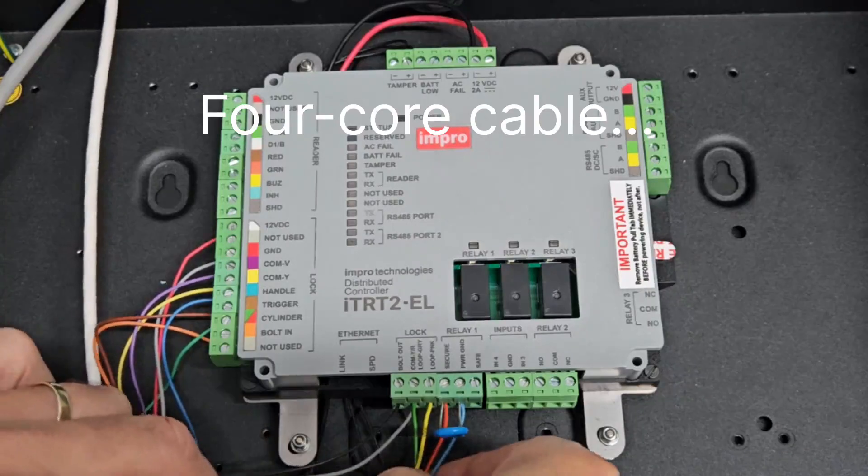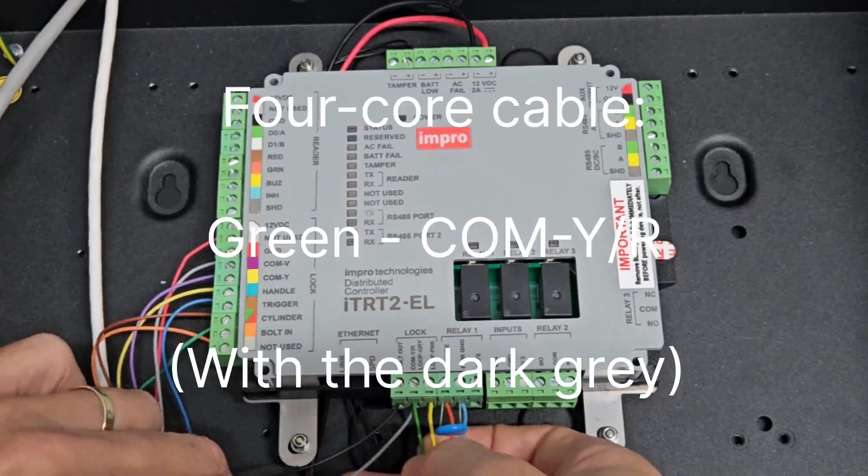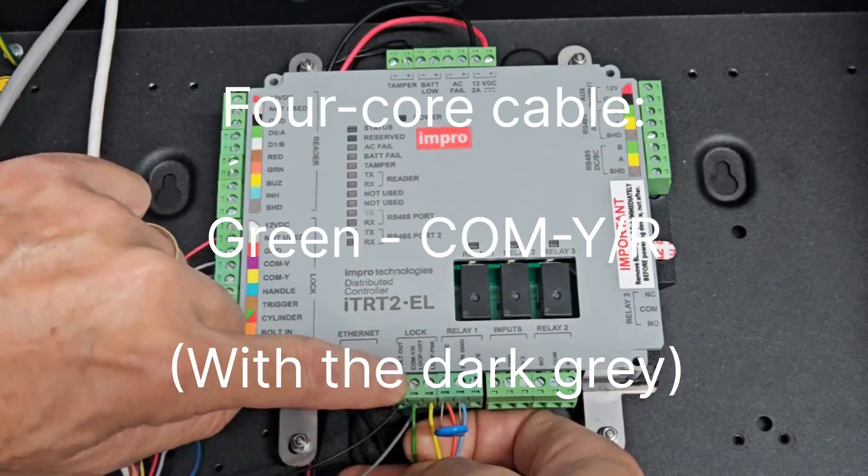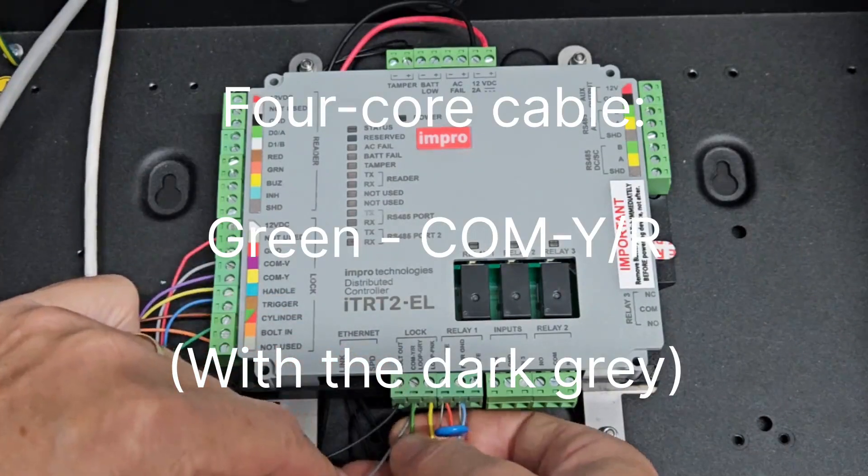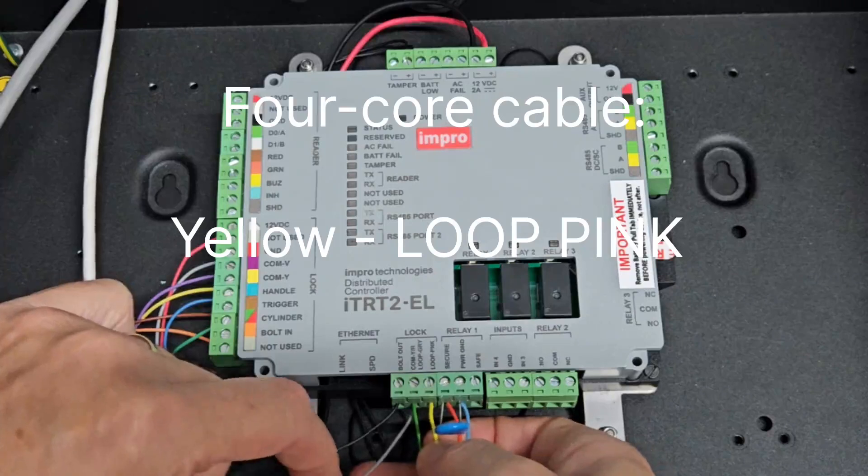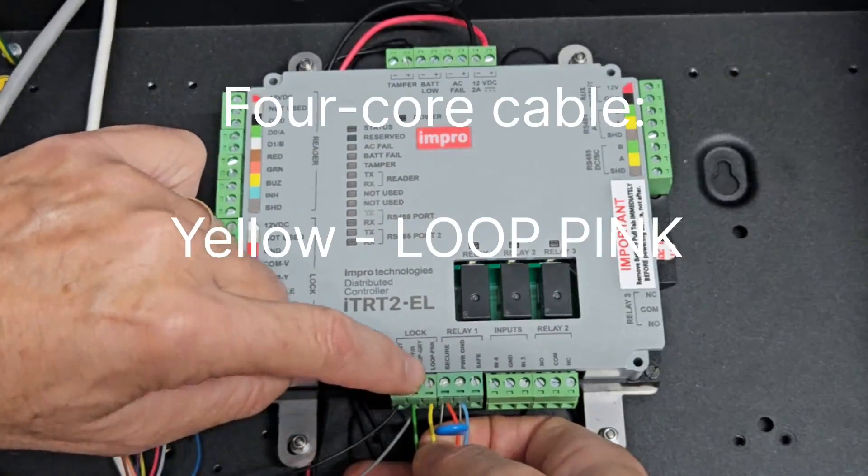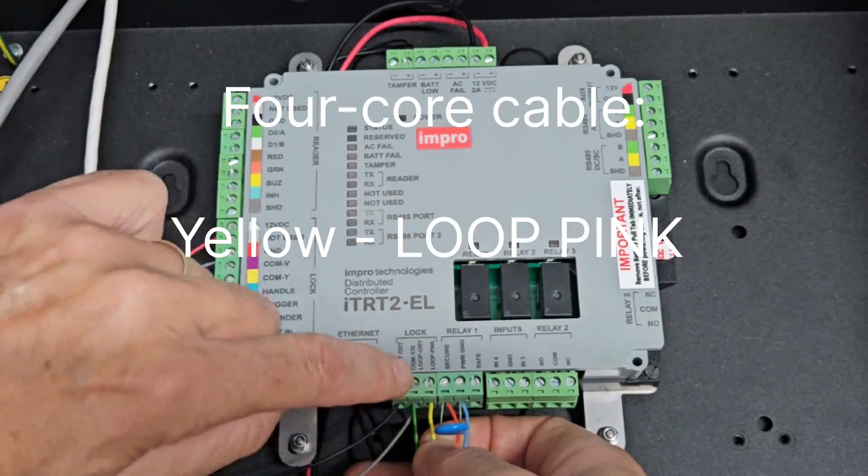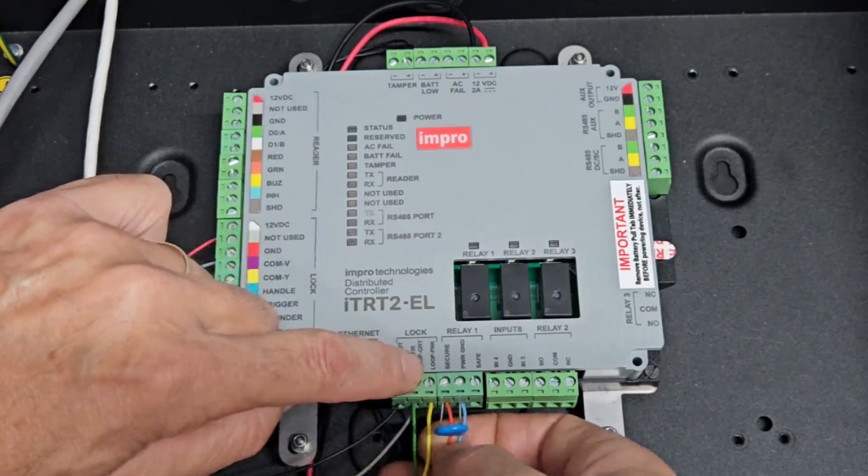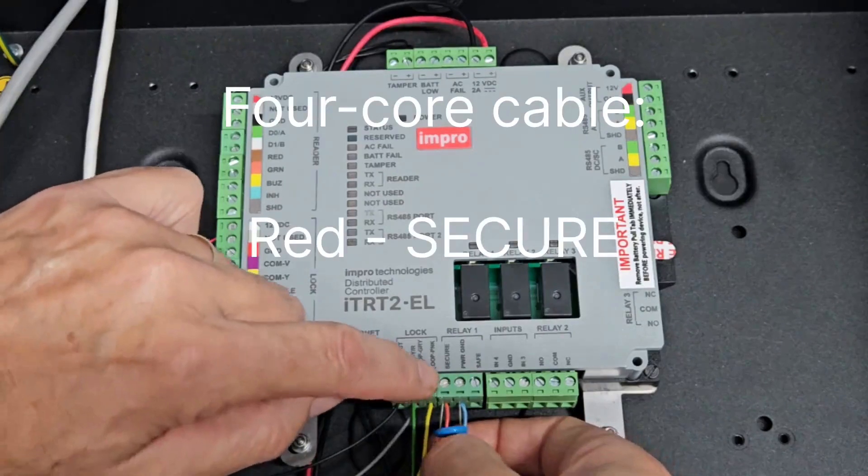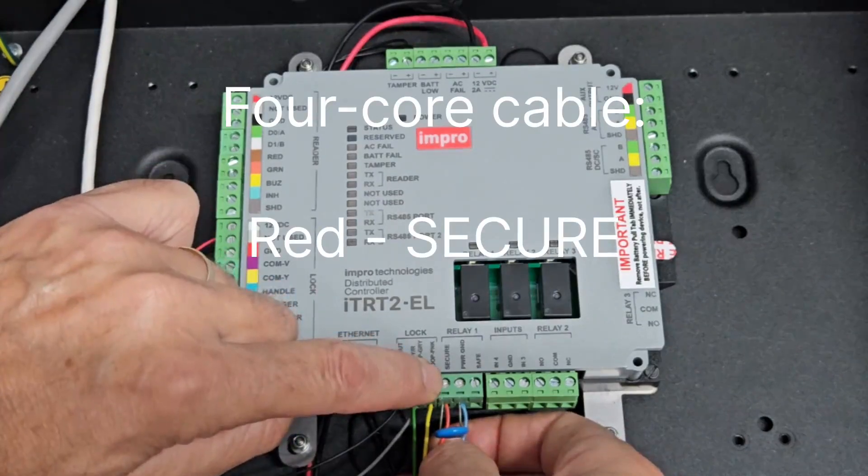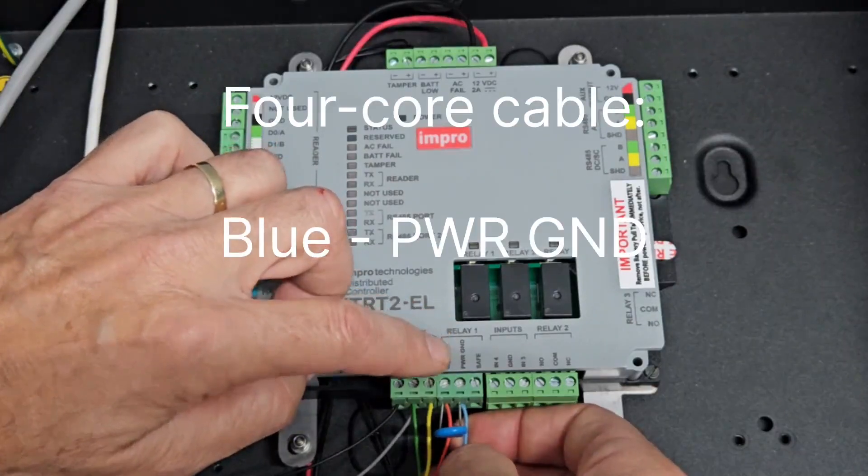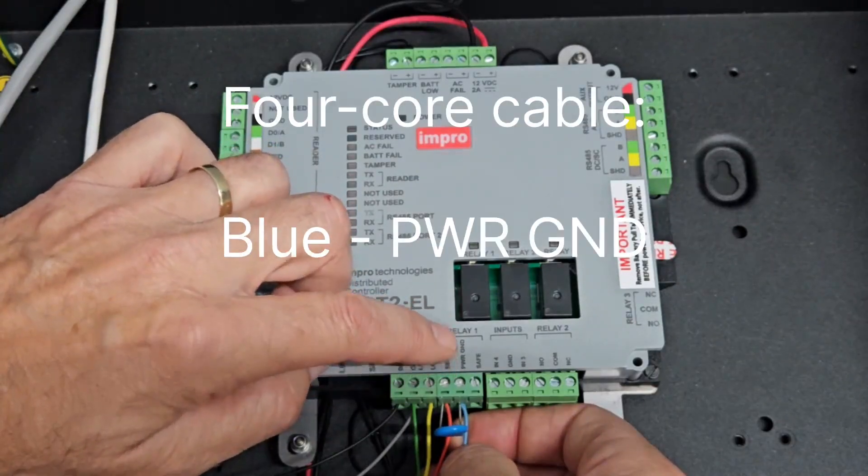Continuing with the 4-core cable, we have a green that joins up with the grey wire that we put into the second lock terminal here. They go and twist it together. Then we have a yellow wire into the third lock terminal, it's called loop pink. Yellow into loop pink. Then we have a red going into the secure terminal under relay one, then a blue one going into the power ground in relay one.